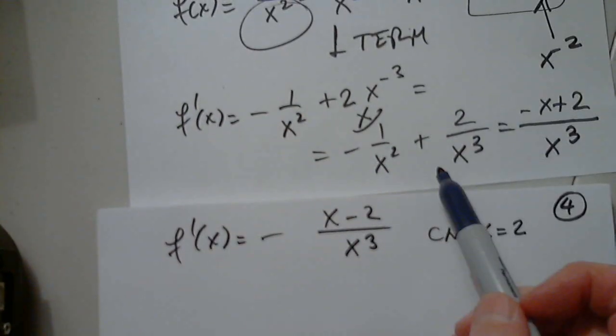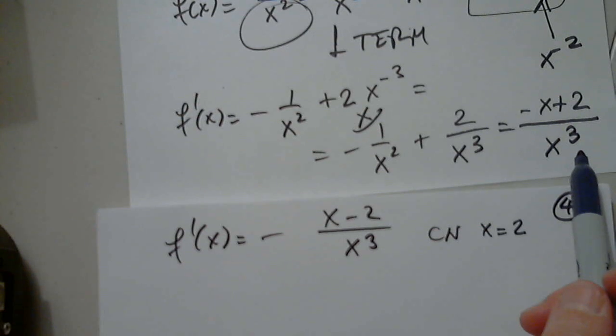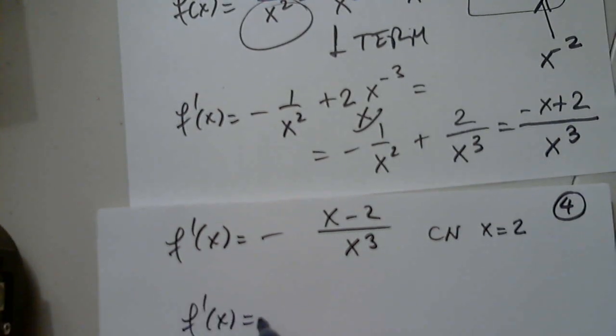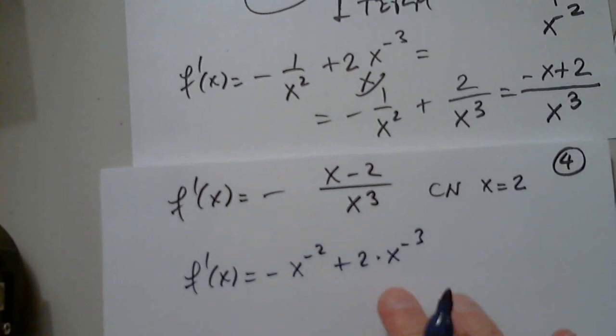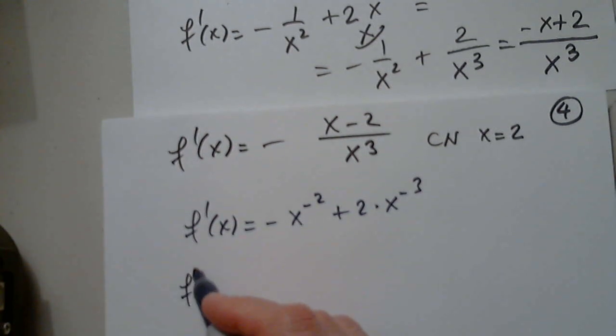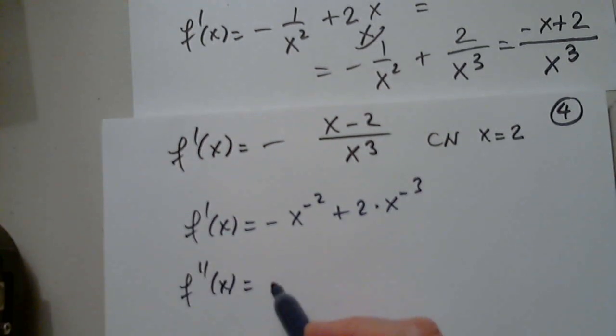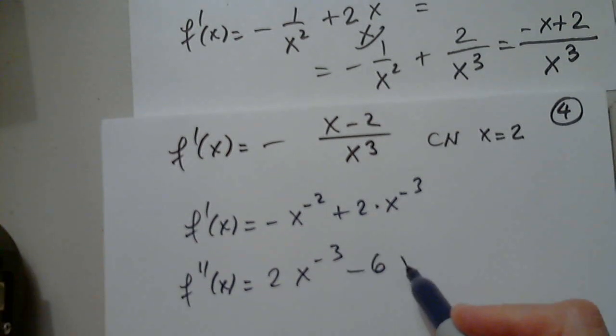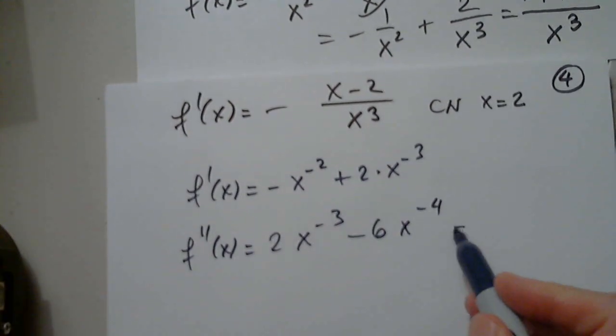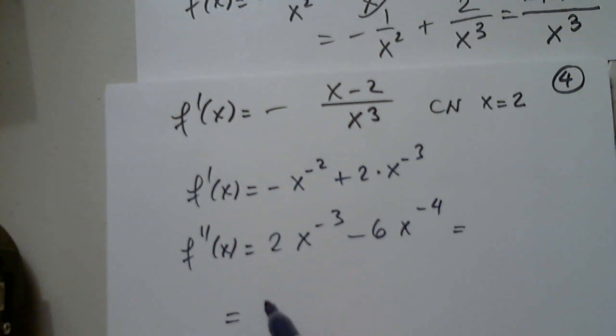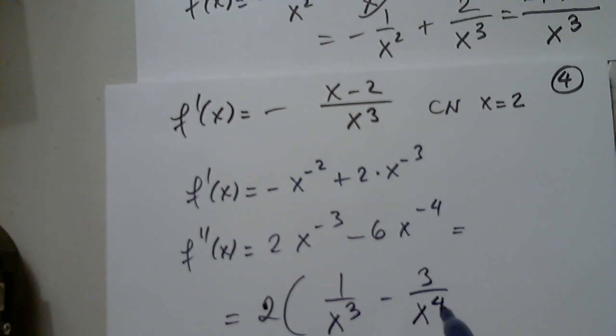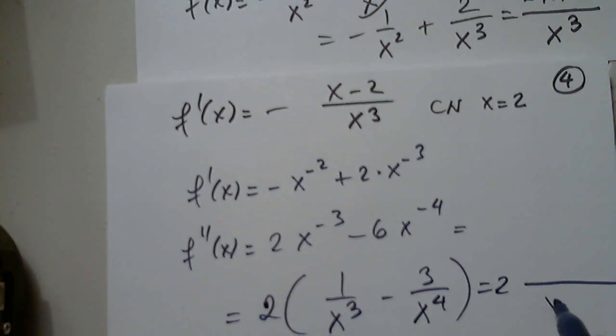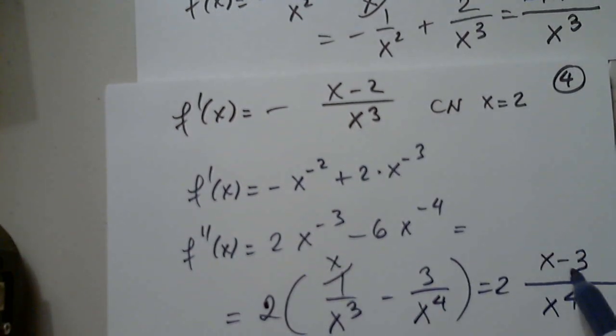For the second derivative, I am going to use this first derivative, not this one. So f prime of x equals negative x to negative 2 plus 2 x to negative 3. This is what I want to differentiate to get the second derivative. 2 x to negative 3 minus 6 x to negative 4. 2 outside. 1 over x to the third minus 3 over x to the fourth. The least common denominator is x to the fourth. And this one needs an x. So x minus 3.